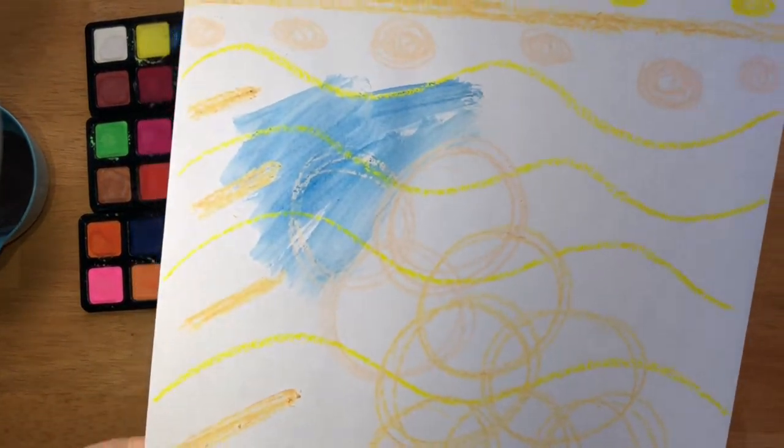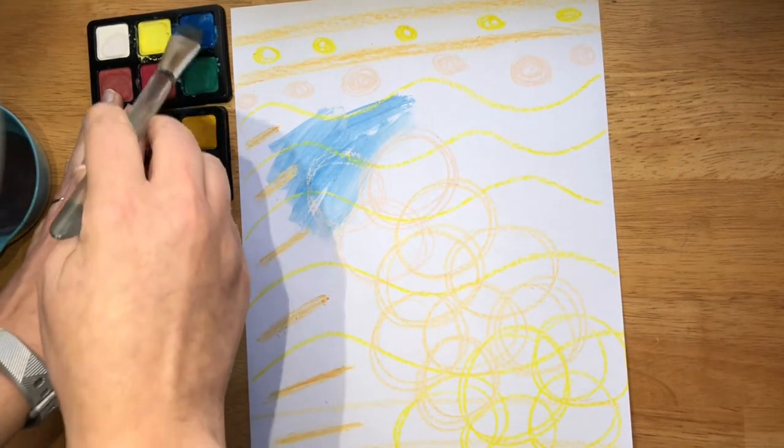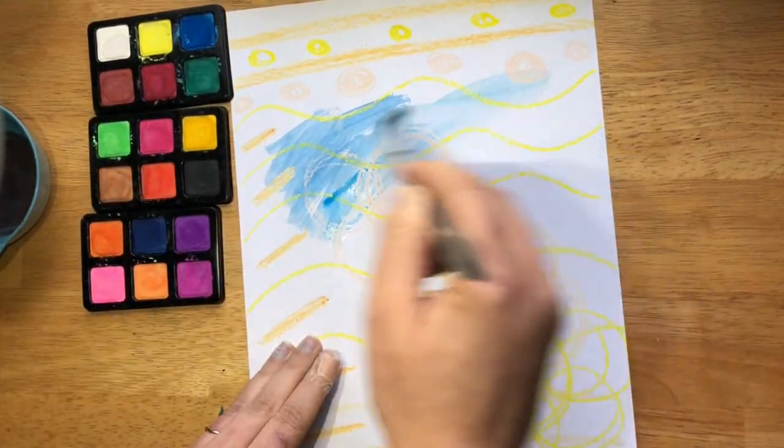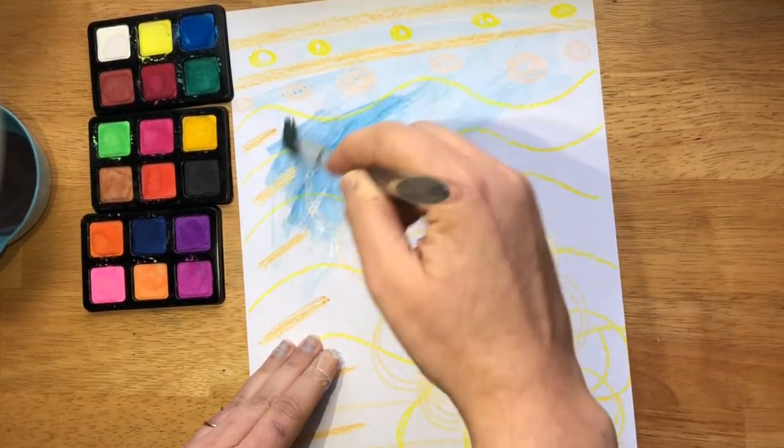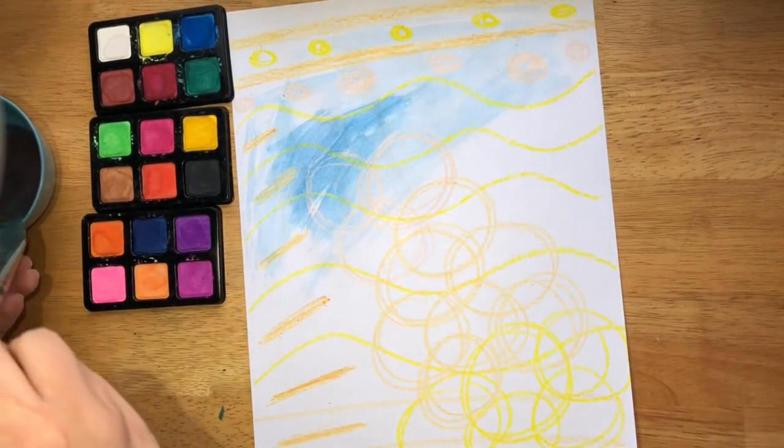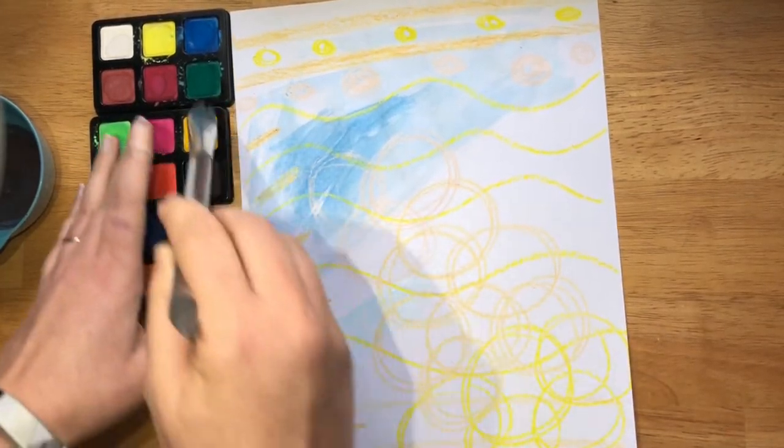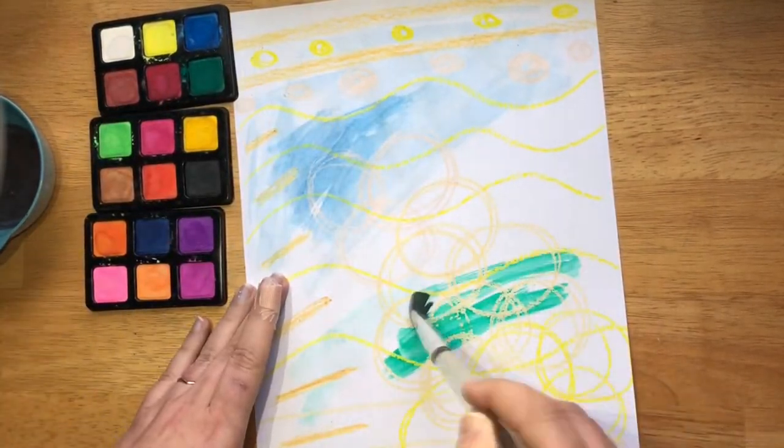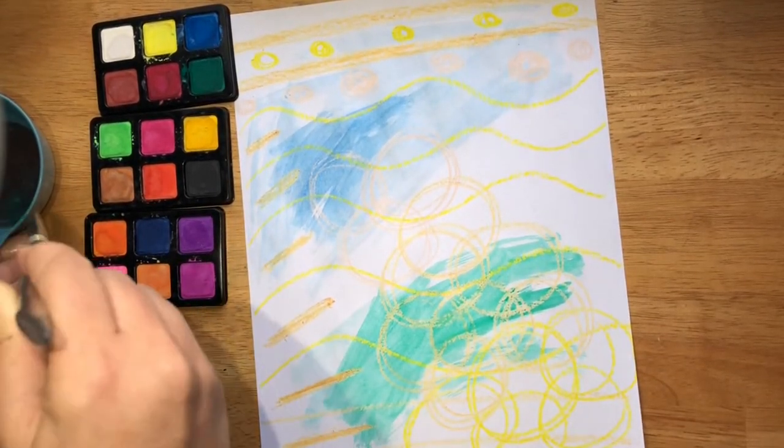So I just kind of let it go, be Elsa, let it go. And maybe we'll transition in some other cool colors down here if I'm thinking kind of like a landscape.